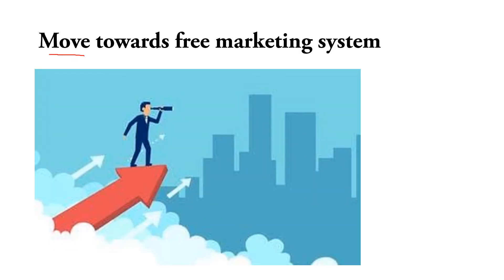Then there is the move towards a free market system. Earlier, the economy was socialized — government was controlling everything. But now government is moving towards privatization, giving freedom to people so they can trade freely by their own choice. The controlled economy is decreasing, and this helps to increase globalization.